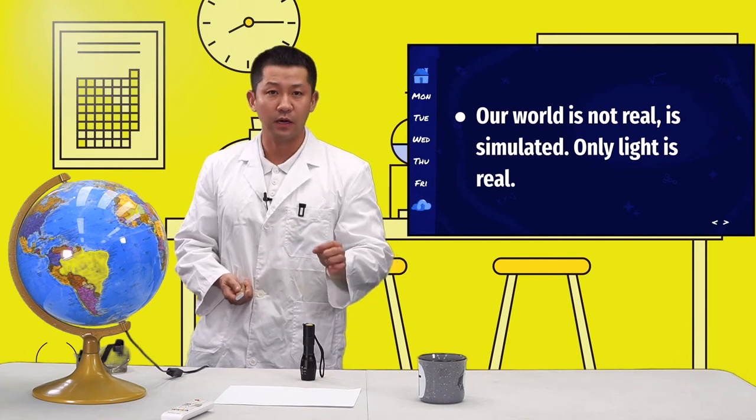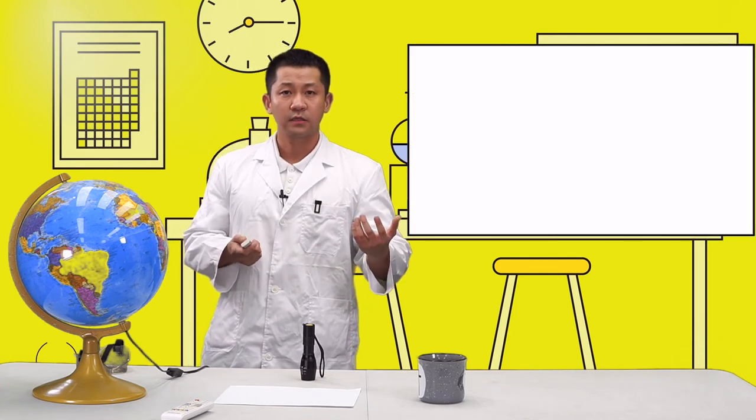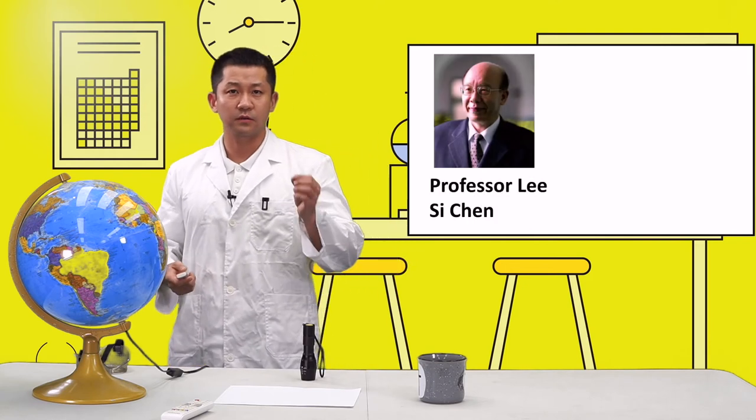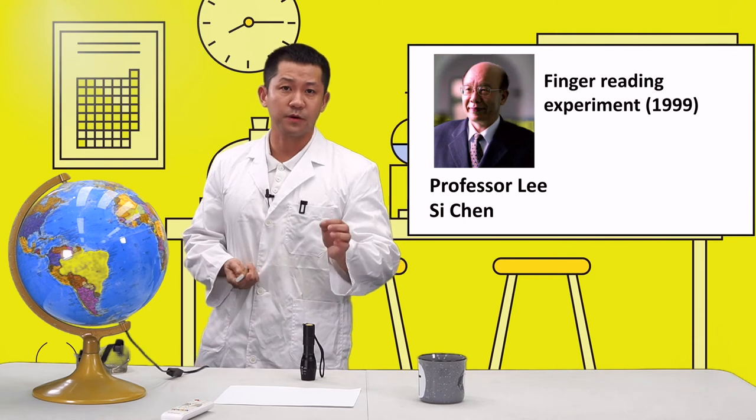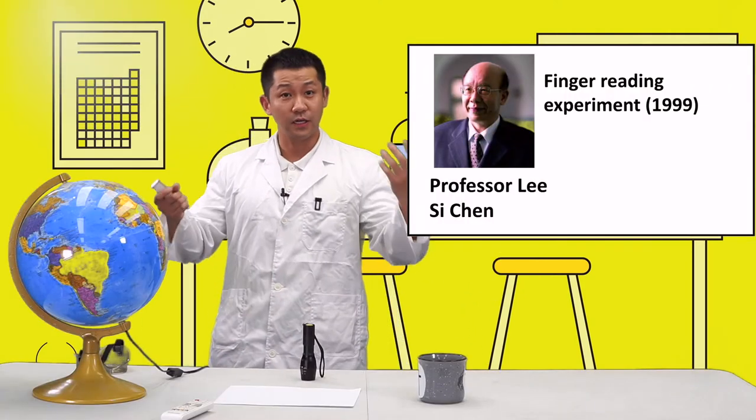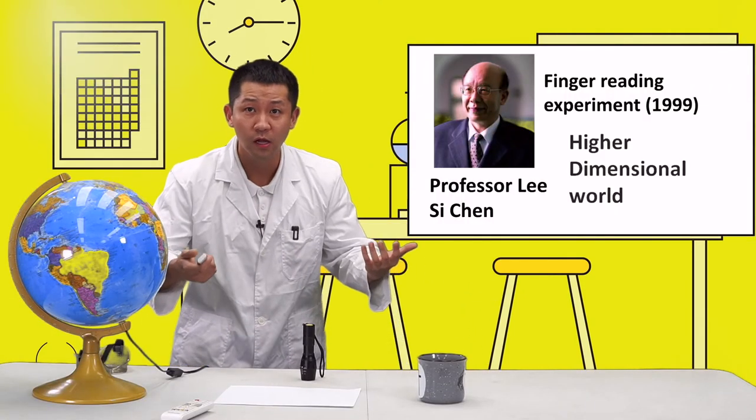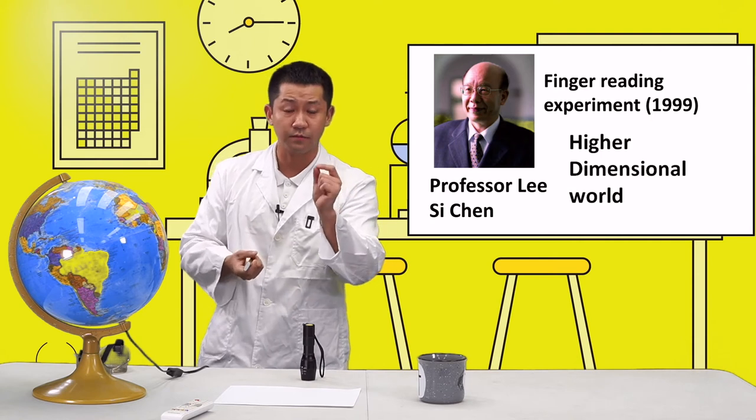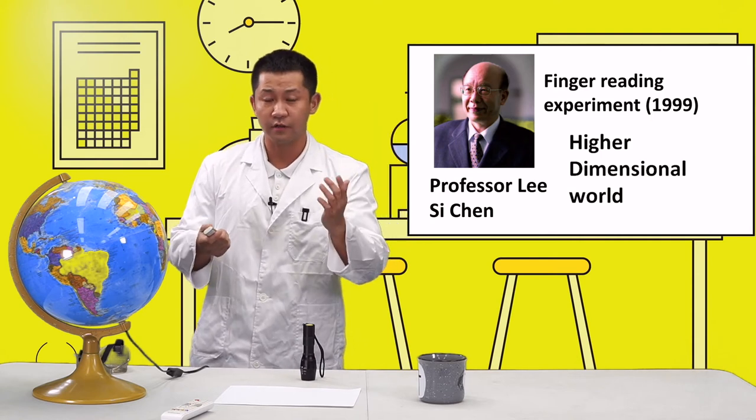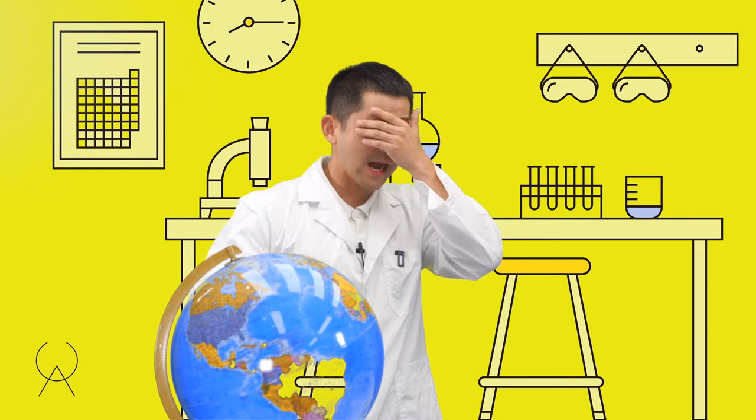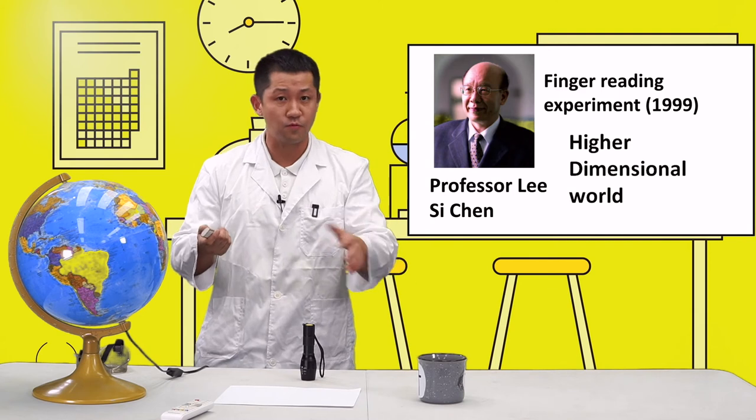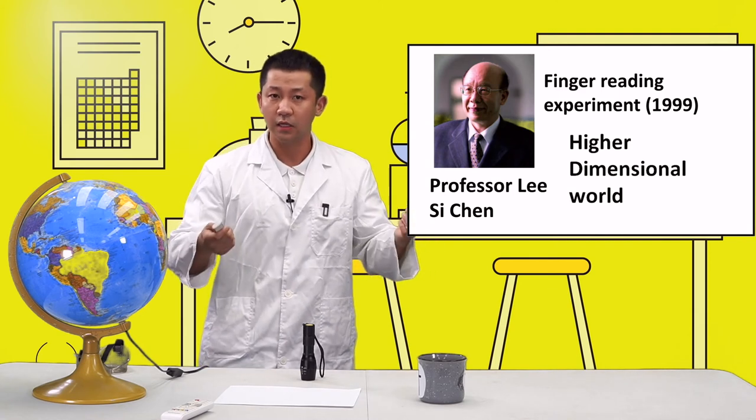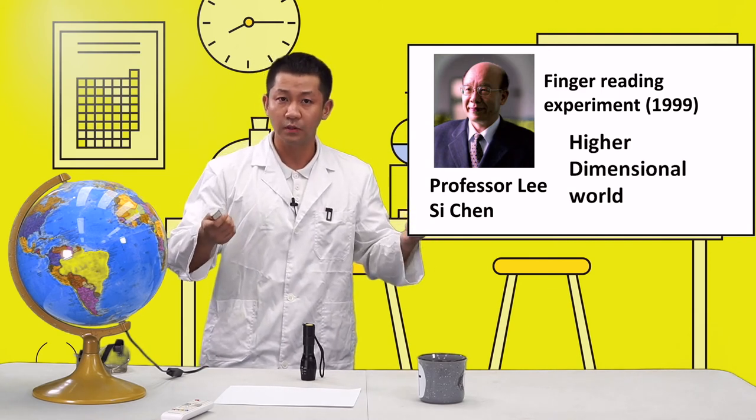Doctor Professor Lee Si Chen has been doing finger reading experiments. This is a very interesting experiment because it shows that the high-dimensional world truly exists. Through this experiment, when students covered their eyes with a blindfold, meaning no light, they cannot read anything by fingers. But when they unfold it, they can read it. That means our world, maybe light is the only real thing.